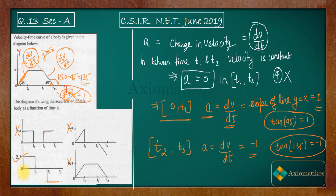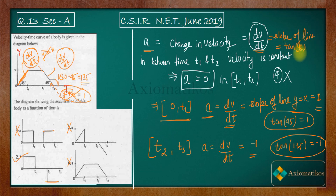This was a straightforward question, entirely dependent on the formula that acceleration equals dv/dt, and dv/dt is the slope of the velocity-time line. The slope equals tan(θ), where θ is the angle made by the line measured anti-clockwise from the positive x-axis. So the second option is the correct answer, and all other options are false.